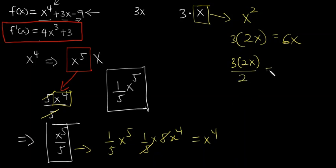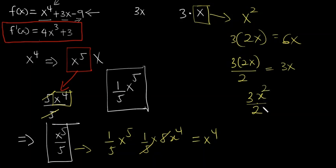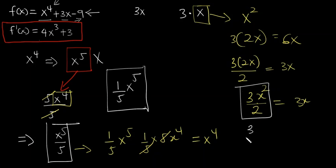So we actually differentiated 3x squared over 2. When we differentiate 3x squared over 2, we get 3 over 2 multiplying 2x, and the 2s cancel, leaving 3x. So we differentiated 3x squared over 2 just to get the 3x.